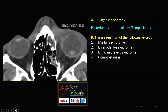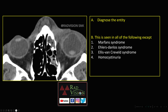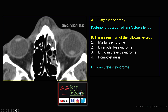Next case: you can see the lens in the normal position in the right orbit, but in the left orbit the lens is completely dislocated posteriorly. This is called posterior dislocation of the lens, or ectopia lentis. It is seen in Marfan syndrome, Ehlers-Danlos syndrome, and homocystinuria, but it is not seen in Ellis-van Creveld syndrome. So the answer is Ellis-van Creveld syndrome.